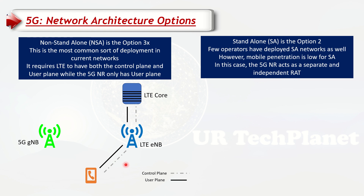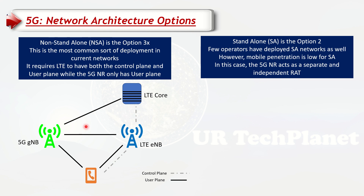Initially this is how it looks. Once the eNodeB finds out that the UE (the handset) is 5G capable, it will try to ensure this user can also get 5G traffic. The first thing it does is divert the user plane towards 5G. Any data coming from the LTE core will then go to the 5G gNodeB and over the air to the handset.